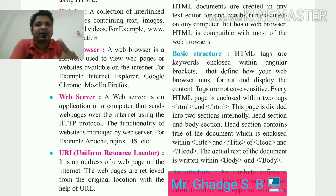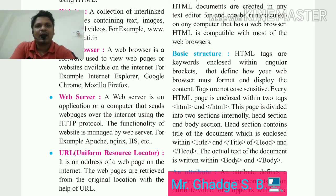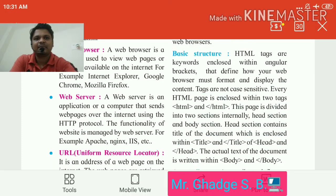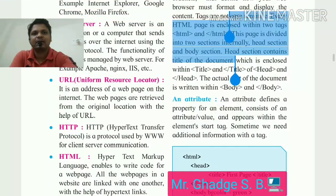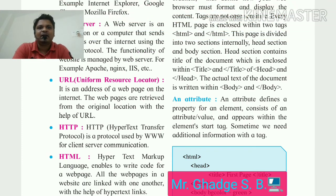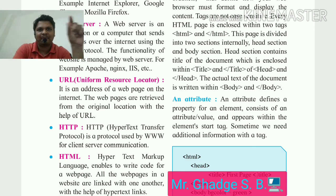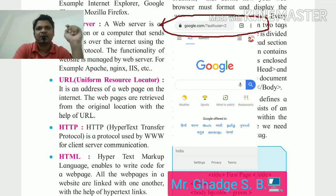IIS stands for Internet Information Server and is related to Windows OS by Microsoft. The functionality of a website is managed by the web server. Next is URL — Uniform Resource Locator — which is the address of a web page on the internet. Web pages are retrieved from their original location with the help of a URL. You can always check the URL in the web address bar at the top of the browser.